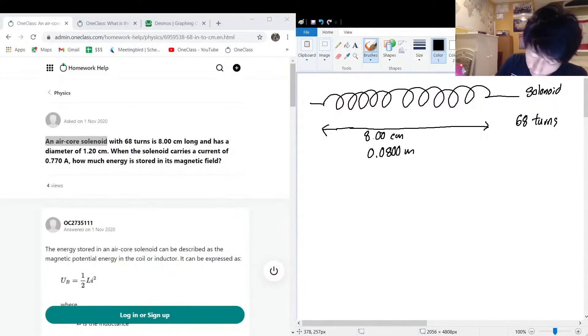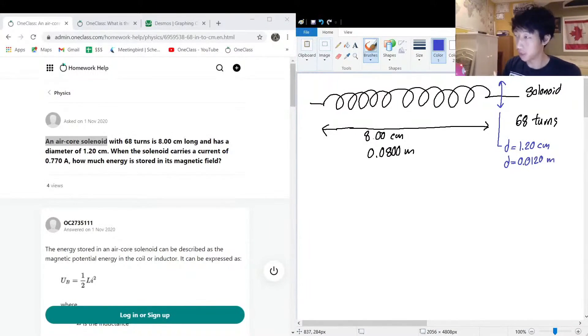And its diameter this way, let's put that in a different color so it's not confusing. In purple here we have the diameter, the diameter is equal to 1.2 centimeters, 1.20 centimeters, which is equal to 0.0120 meters. It's just nice to do some conversions pretty early so that you don't need to worry about them later.